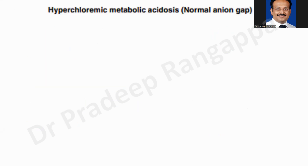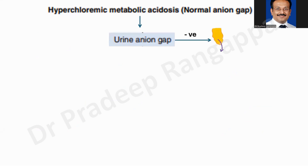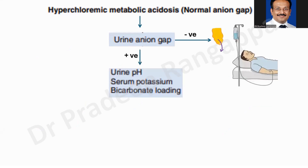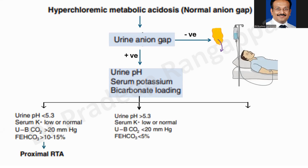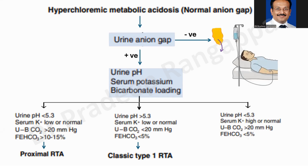Here is a flow chart for approaching hyperchloremic metabolic acidosis: check urine anion gap. If negative — gut loss of bicarbonate, give fluid resuscitation. If positive — check urine pH and serum potassium. If urine pH is less than 5.3 with high potassium, it is type 4 RTA — look for hypoaldosteronism, ACE inhibitors, ARBs, trimethoprim, potassium-sparing diuretics, obstructive uropathy. If urine pH is more than 5.3 with low/normal potassium and FE bicarbonate less than 5%, it is type 1 RTA. If urine pH is less than 5.3 with high/normal potassium and FE bicarbonate less than 5%, it is type 4 RTA.